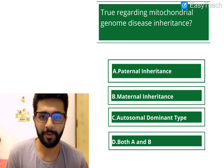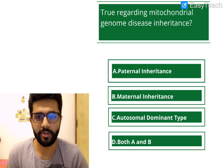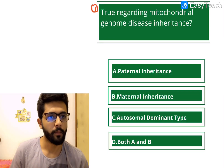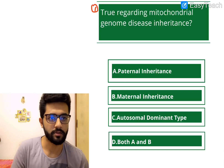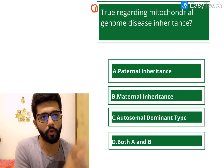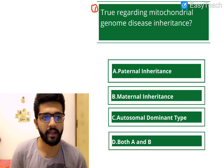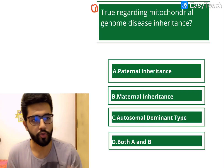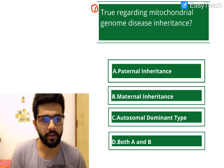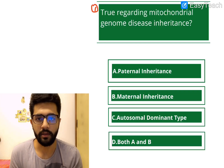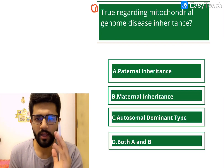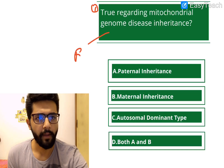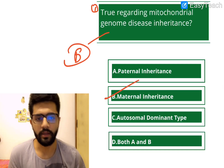Welcome to MCQ discussion number 19. The first question: which of the following is true regarding mitochondrial genome disease inheritance? Options are: A) paternal inheritance, B) maternal inheritance, C) autosomal dominant inheritance, or D) both paternal and maternal inheritance. The answer is B, maternal inheritance.